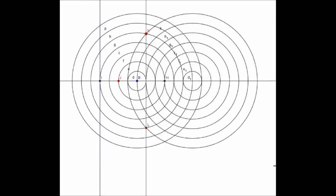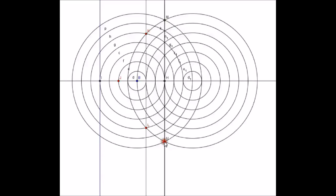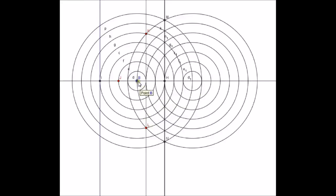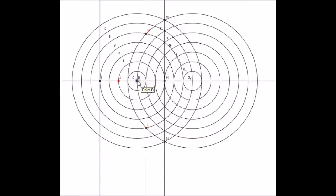Are there any more points on our parabola? It turns out that taking the intersections of both of the largest circles also gives us points on the parabola. The distance from N to the focus is 1, 2, 3, 4, 5, 6, 7; and the distance from N to the directrix is also 1, 2, 3, 4, 5, 6, 7. So we have two more points on the parabola.